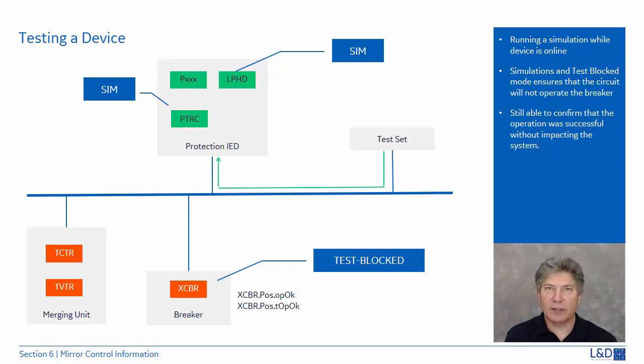A test set will send a sample value with the same identifications as the ones normally received by the protection IED but with the simulation flag set to true. The protection IED will now receive the sample values from the test device and will initiate a TRIP.